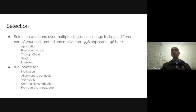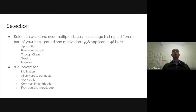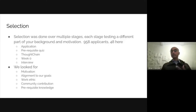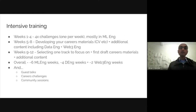Selection went from 958 applicants down to 48 people through multiple stages: application, essay, prerequisite quiz, blockchain alumni vote, nationality and graduation review, week zero, and finally an interview. We looked for motivation and hunger, alignment to our goals, work ethic, community contribution, and prerequisite knowledge. Every week from now on, we'll be looking for the same things — minus prerequisite knowledge.